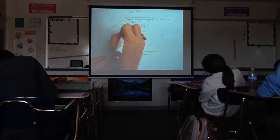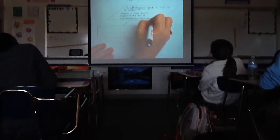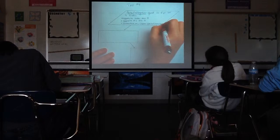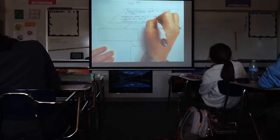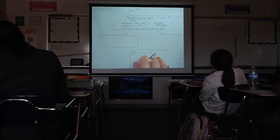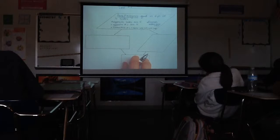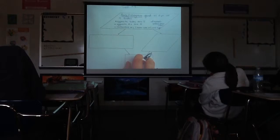We know that consecutive angles — or same side interior angles — are supplementary. And we've learned that the diagonals bisect each other. So those are four bullets for the parallelogram: opposite sides congruent, opposite angles congruent, same side interior angles supplementary, and diagonals bisect one another.